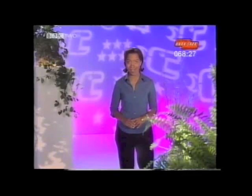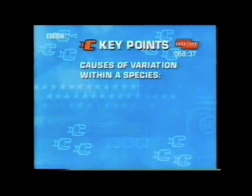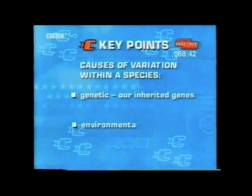Plant variations within a species are also due to their genetic makeup and the environment. But unlike animals, environmental conditions have a much greater effect on how a plant turns out — more sunlight, more soil nutrients, and more water can make one plant twice as big as another. Points to remember: variation within a species is caused by two factors — genetic causes, due to the genes we inherit, and environmental causes, due to the conditions we live in.